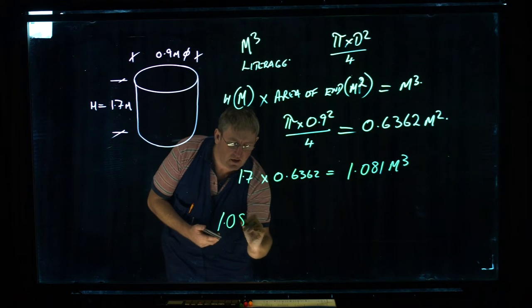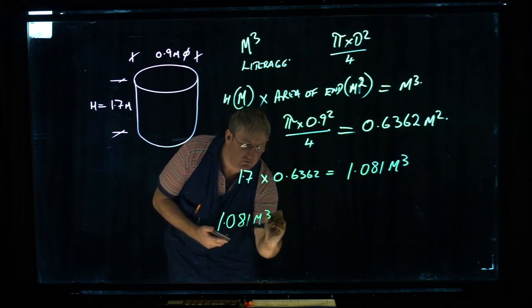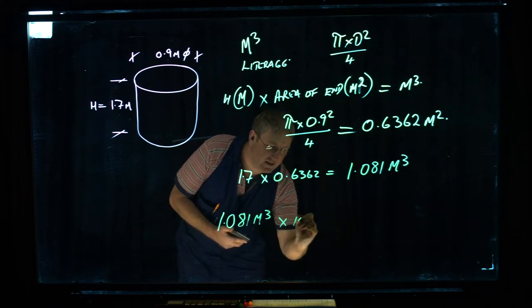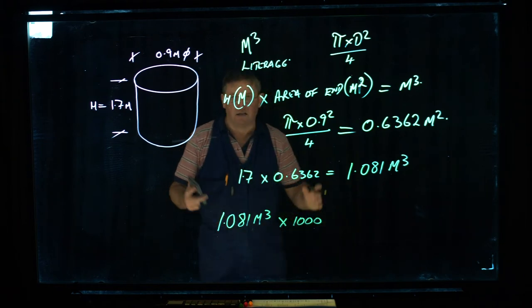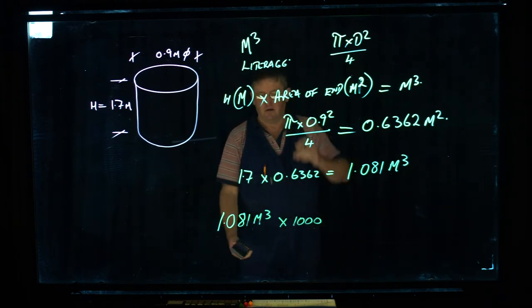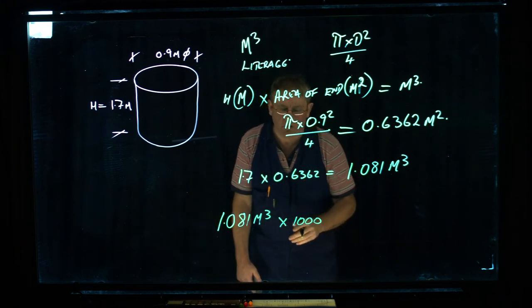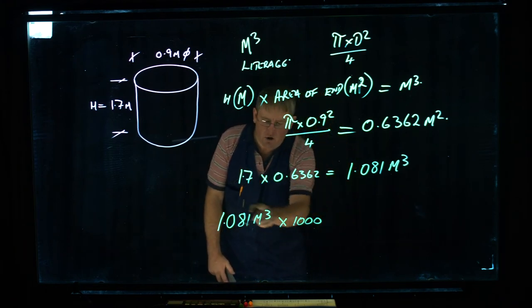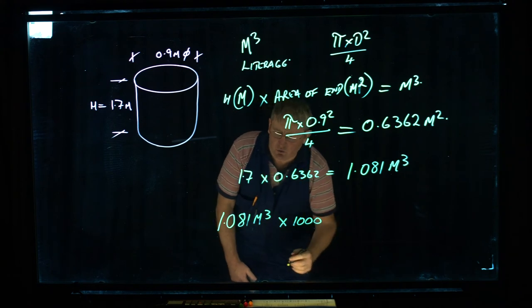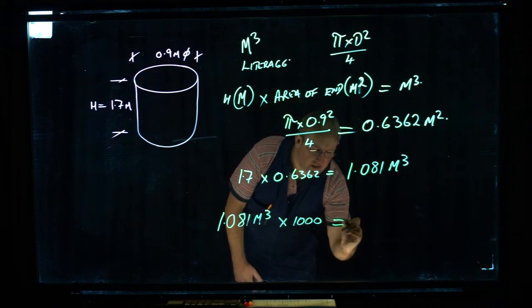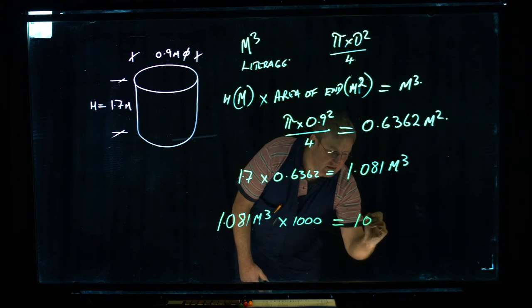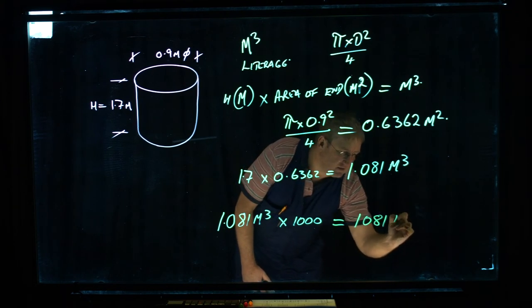1.081 metres cubed, we can then times it by 1,000. In a cubic metre, there is 1,000 litres of water. So we're going to times 1.081 times 1,000 equals 1,081 litres.